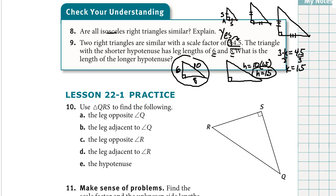The scale factor is the number you multiply by to change the sides of a triangle. In this lesson, we looked at right triangles and practiced using the Pythagorean theorem to figure out the hypotenuse when we knew the leg lengths. We also practiced using scale factor to change the size of a shape, and learned the vocabulary words adjacent leg and opposite leg to refer to the sides of a right triangle.